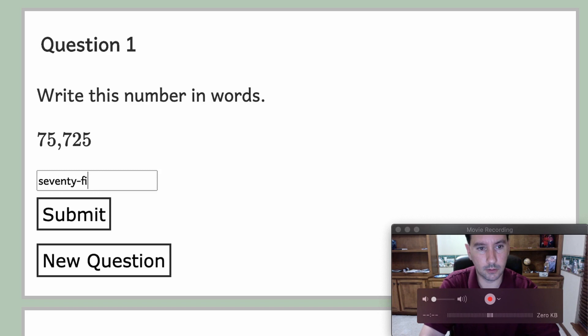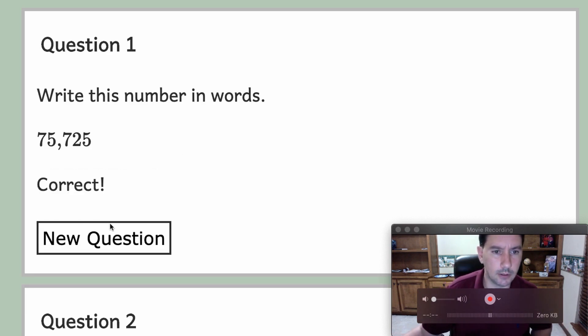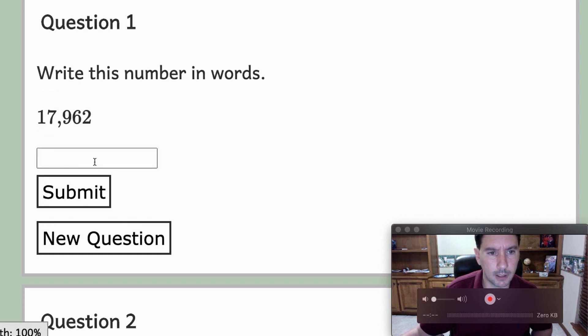Let's write this out: seventy-five thousand seven hundred twenty-five. Submit. And it says correct. Now let's see what happens if I get one wrong. I'll say seventeen thousand nine hundred and let's forget the dash, sixty-two.